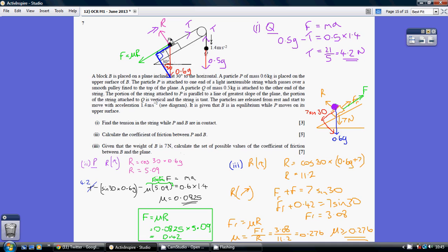And we're now obviously just looking at P only here, so our F equals M times A, so our mass of P is 0.6 times acceleration, which is of course also 1.4. This allows us to work backwards to work out that mu is 0.0825.